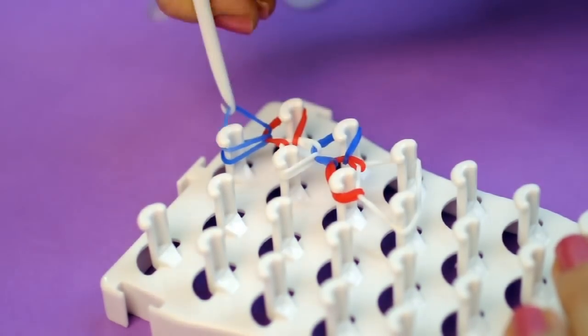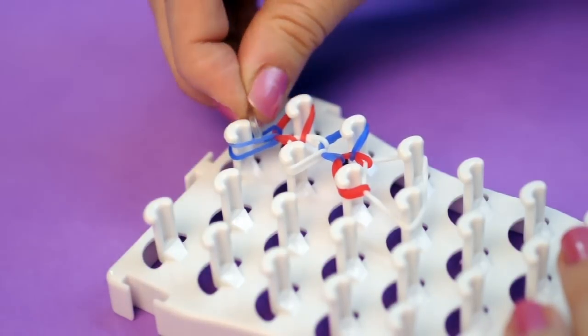To finish your ring, slide a C-clip through the last band at the top of the loom to secure it.